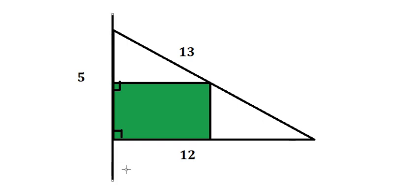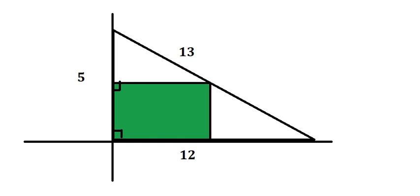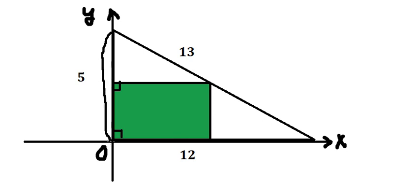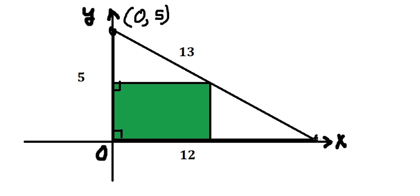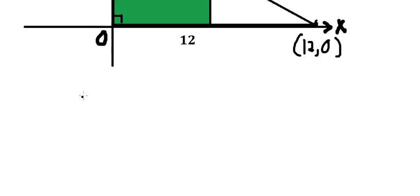First, I will place the xy-axes at this location. The origin is here. We know that this length is 5, so the point here is at (0, 5). The other length is 12, so we have the point (12, 0) on the x-axis.